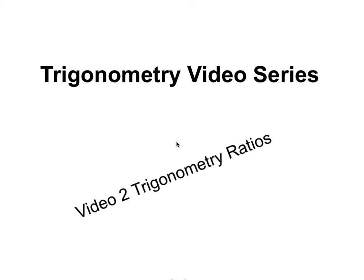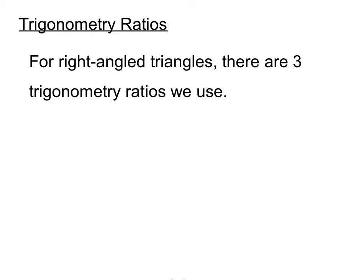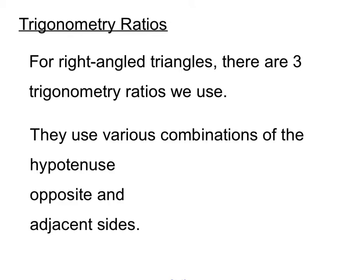Hello and welcome to the Trigonometry video series, video 2. This time we're having a look at the Trigonometry Ratios. There are three Trigonometry Ratios we can use for right angle triangles, and they use the various combinations of the hypotenuse, the opposite side and the adjacent sides.